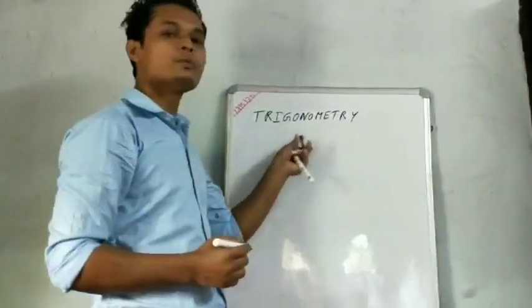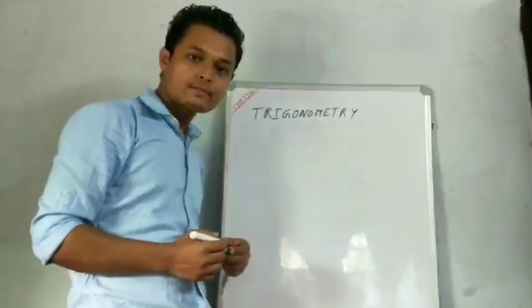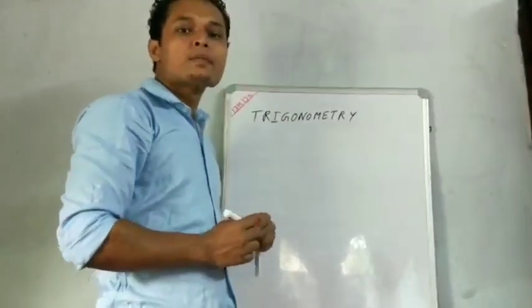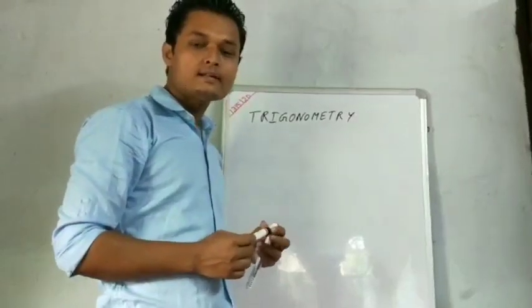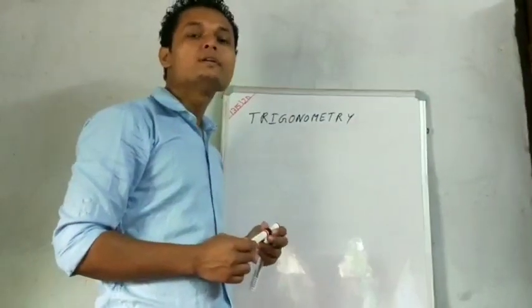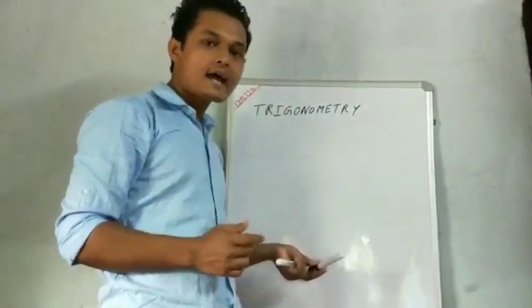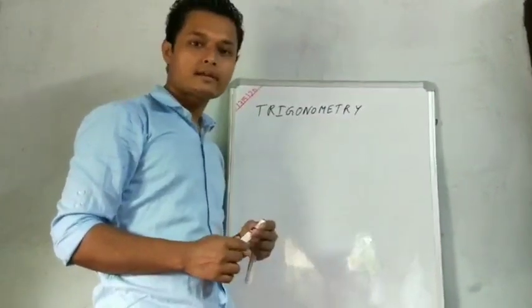So, what is Trigonometry? Trigonometry is a branch of mathematics that deals with the relationship between the sides and angles of a triangle.